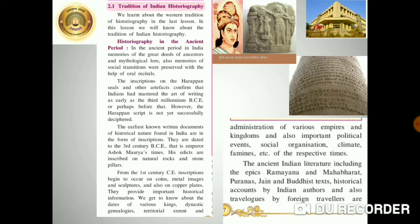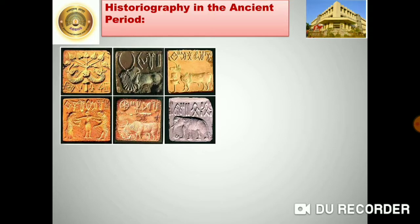The ancient literature, including epics like Ramayana and Mahabharata, Puranas, Jain and Buddhist texts, historical accounts by Indian authors, and also travel logs by foreign travelers, are important sources of history. Here on the screen we have the inscriptions on the Harappan seals. When the Harappa civilization was excavated and discovered, the excavators found these seals, and you can see something is written on them — this reveals their history.